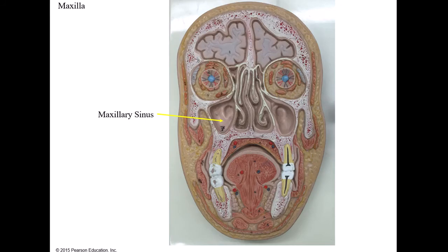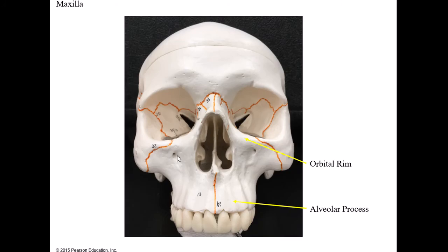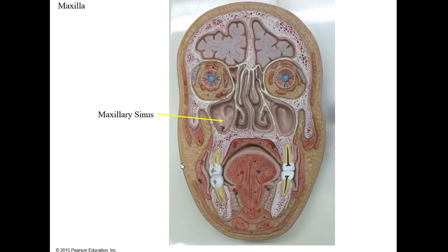The maxilla has a sinus right inside it. We've all had a cold or sinus infection where you feel pressure in that area - that sinus is known as the maxillary sinus. In a cross-sectional view, you can see the ethmoid sinuses, the nasal septum, and then the maxillary sinuses as two large cavities. The function of sinuses is to humidify the air.